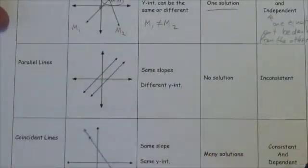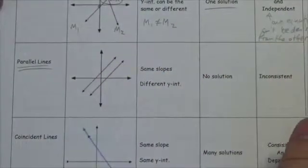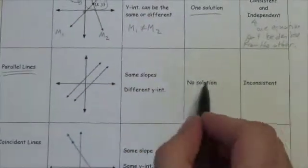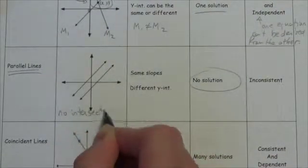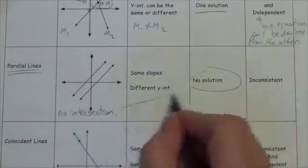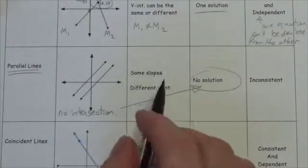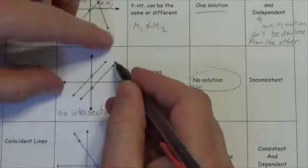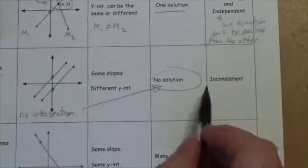The second scenario is parallel lines. Parallel lines aren't going to intersect in the Cartesian plane, so there's no solution, no point of intersection. With parallel lines we've got the same slope and specifically we've got different y-intercepts, so we have two distinct lines with the same slope. There's no point of intersection, and we call this inconsistent.